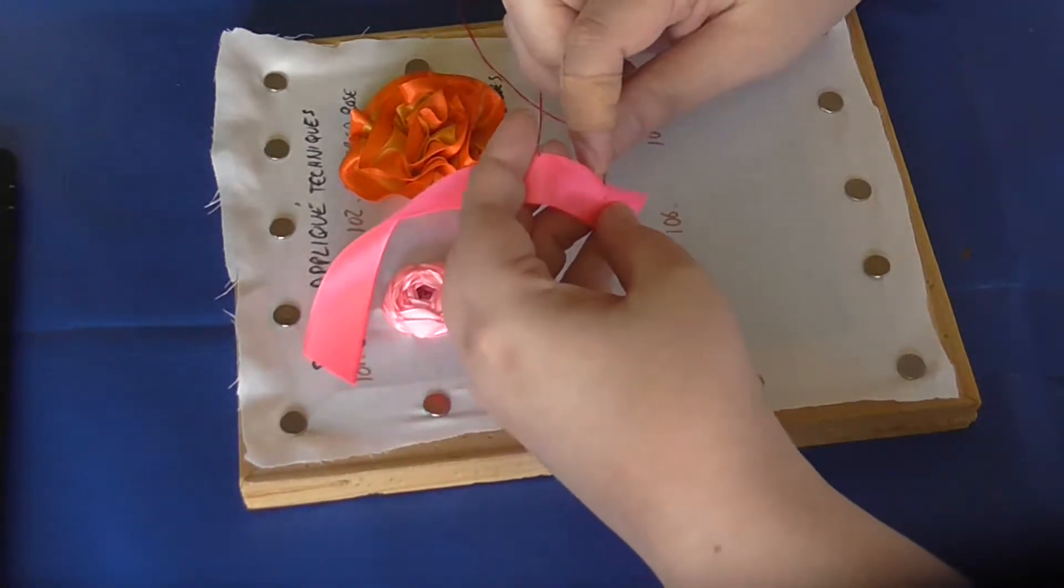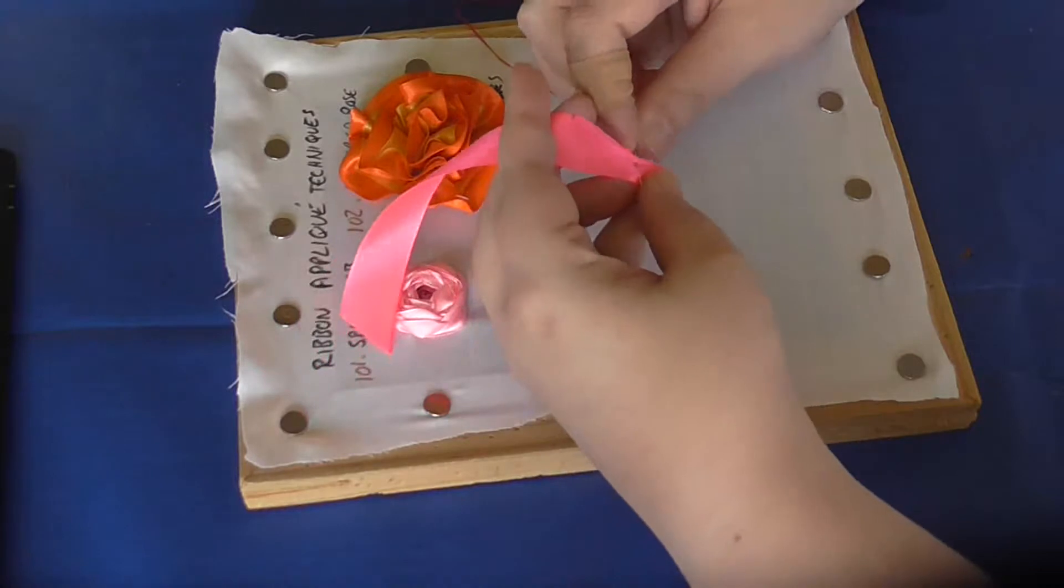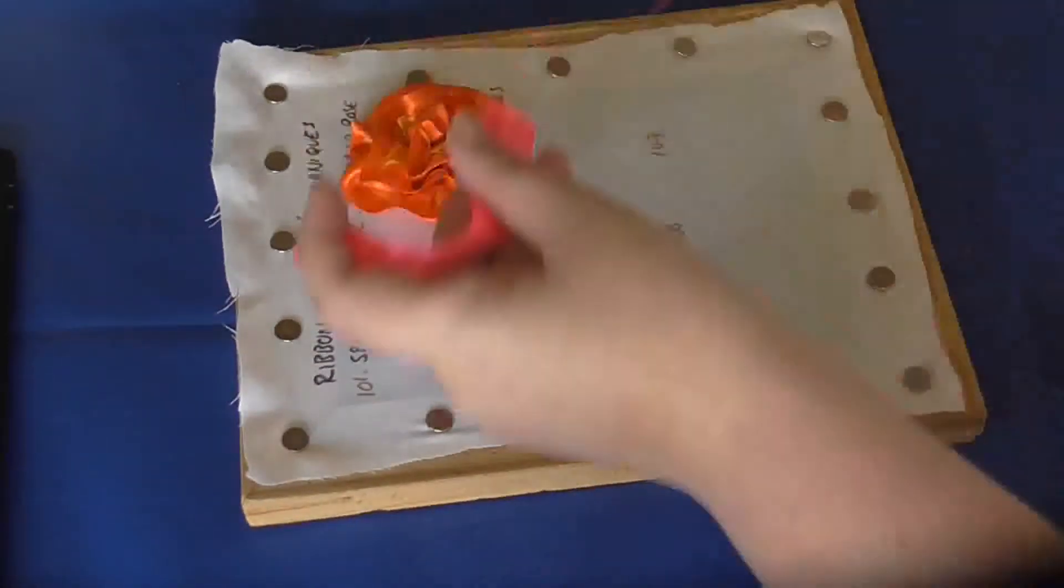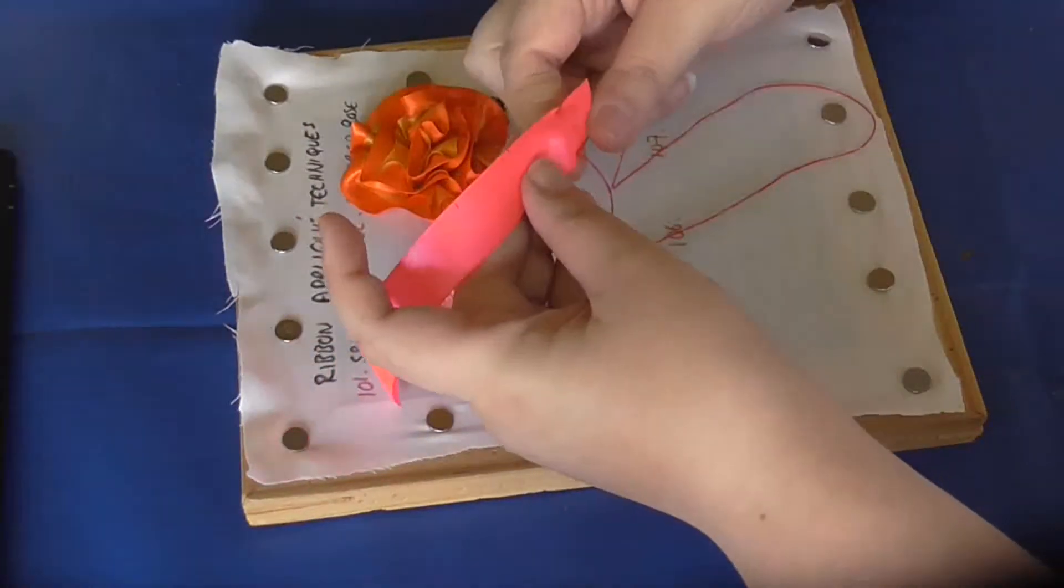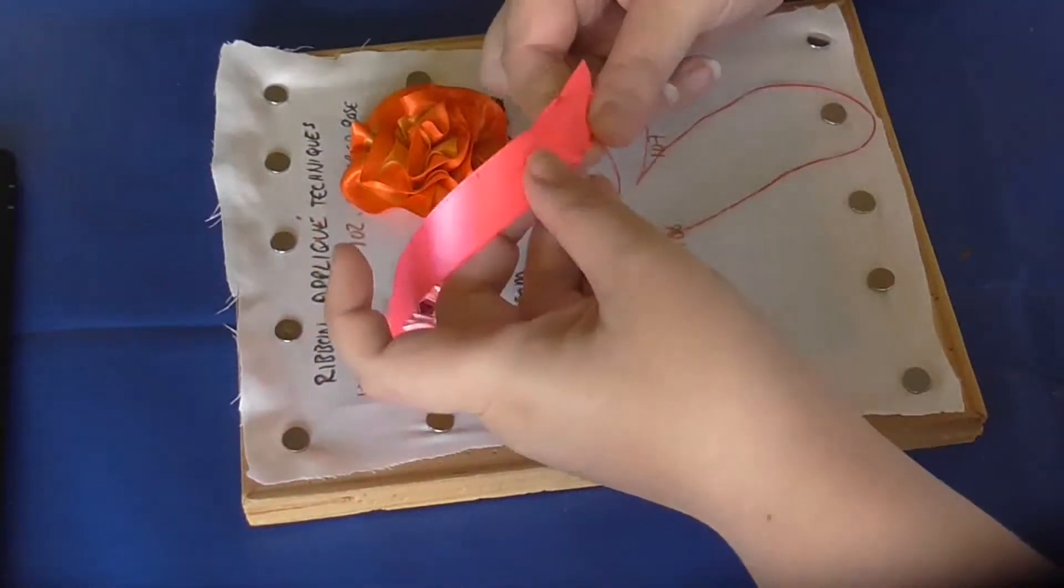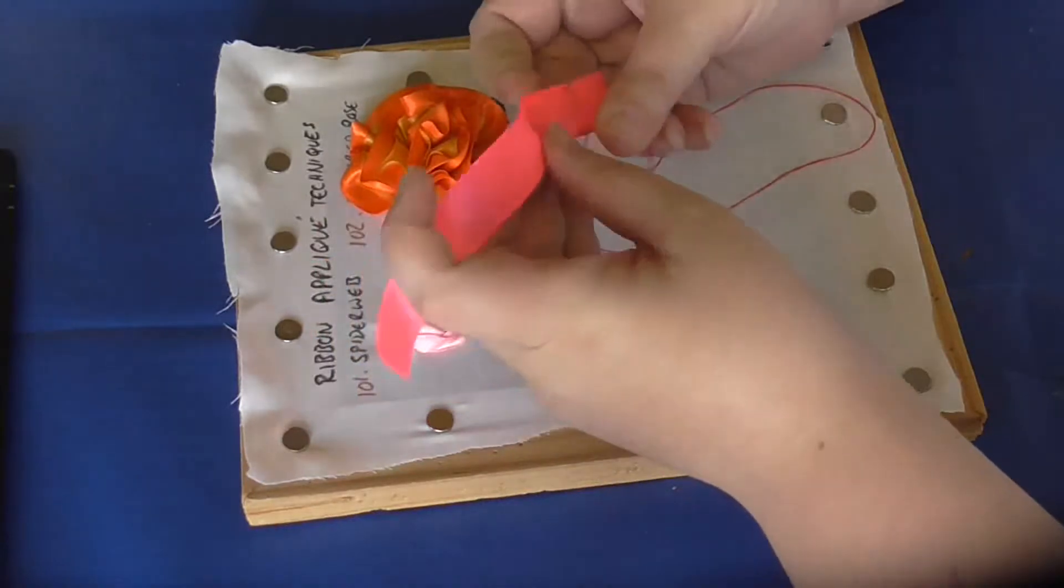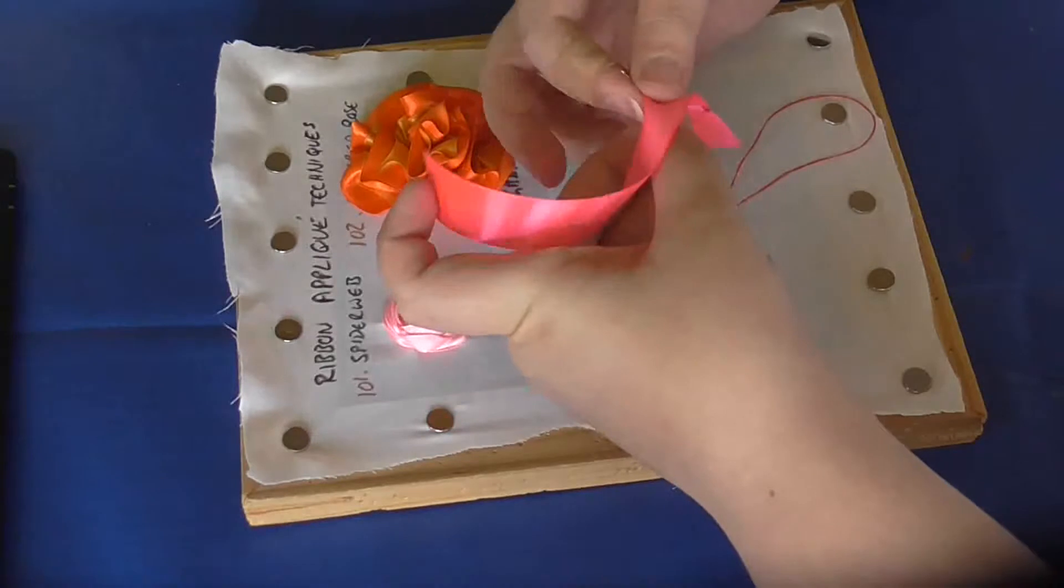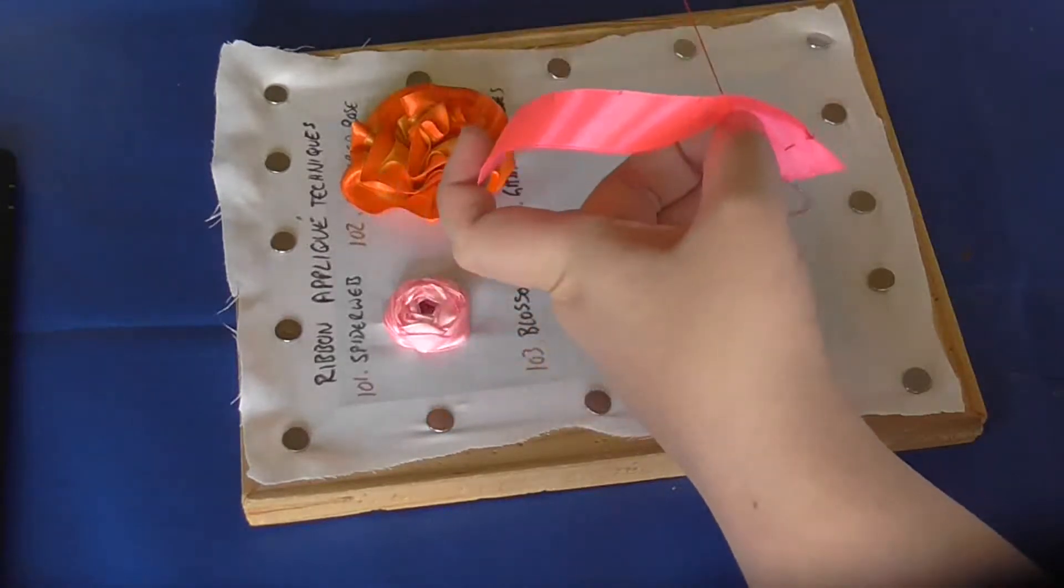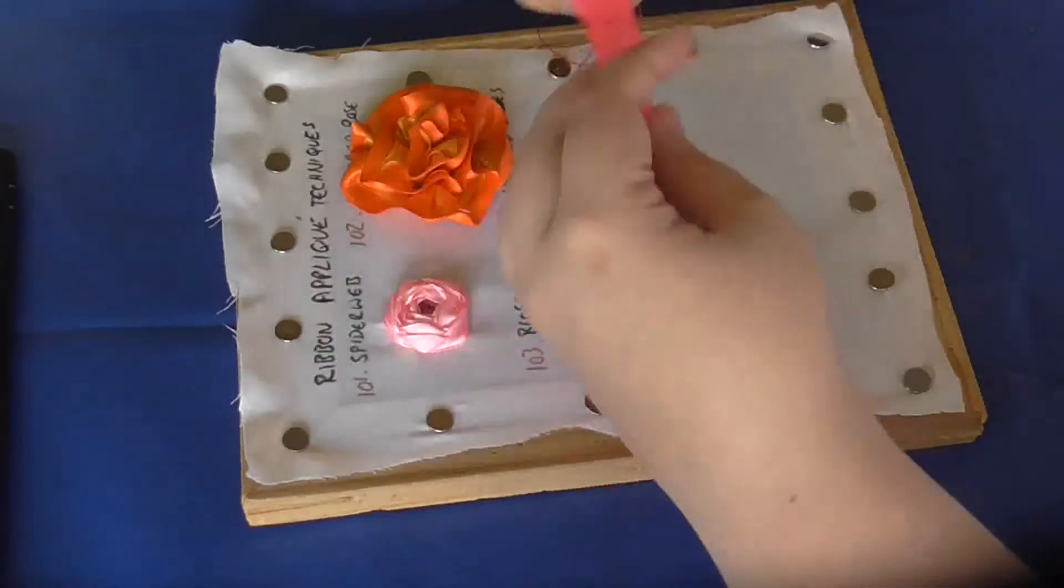Then you need to make a U shape or W shape—just a running stitch down, then across, and then back up.